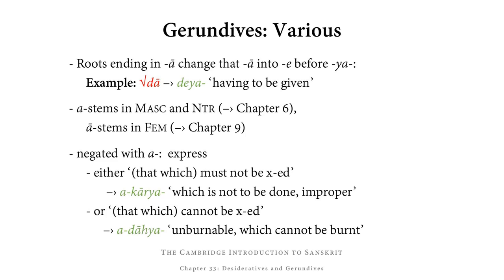A few more remarks concerning both the form and the meaning of gerundives. First of all, verbal roots that end in long ā change that ā into e before the gerundive suffix ya. So, for example, from dā (to give), we get deya, meaning having to be given. Gerundives all need endings, and the endings they use are those of short a-stems for the masculine and neuter, and those of long ā-stems in the feminine.